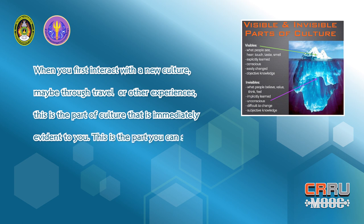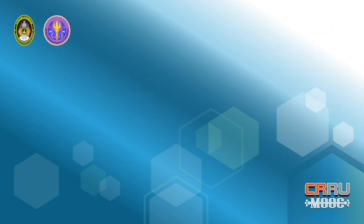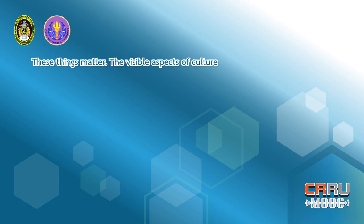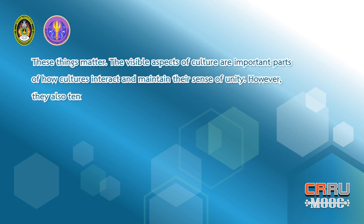This is the part you can see, taste, smell, hear, and touch. It includes things like food, music, visual arts, language, celebrations, and games. The visible aspects of culture are important parts of how cultures interact and maintain their sense of unity. However, they also tend to be fluid — recipes and games and arts can all change over time.